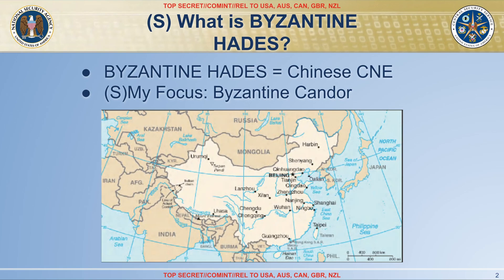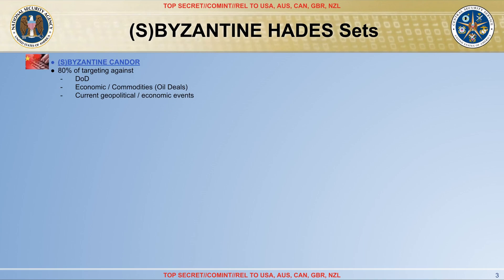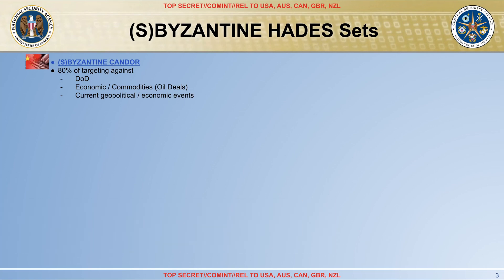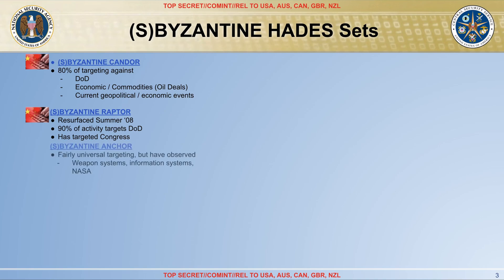Additionally, there might be overlap with various actors. Here we see a series of codenames the NSA-CSS was using to track different Chinese cyber-espionage activities at the time. Byzantine Candor was primarily targeting the DOD, with oil deals for economic espionage and focusing on current geopolitical and economic events. Byzantine Raptor was mainly focusing on spying on the US DOD, but had also targeted Congress and resurfaced in 2008. Byzantine Anchor had more generic targeting, but was mainly around stealing information related to weapon systems, information systems, and NASA.